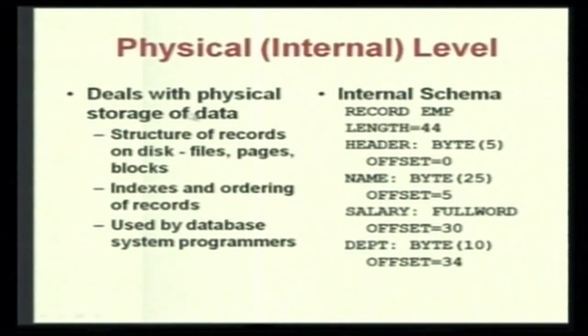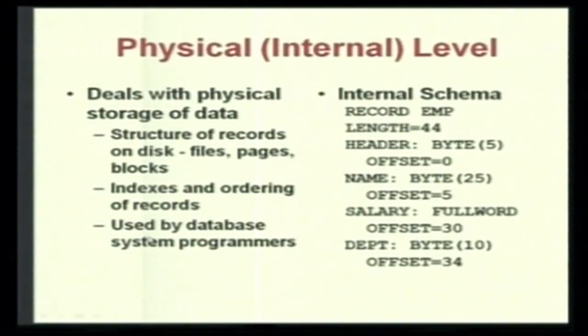The choice of indexes affects the speed at which you search for data. If you do not choose a proper index, you can end up with poor efficiency. This is used by database system programmers. An example of the internal schema specifies a record like: employee length equal to 44, header byte 5 — all sizes and offsets specifying exactly how data is stored in physical memory.